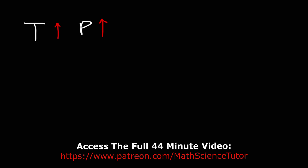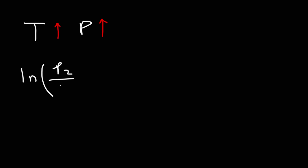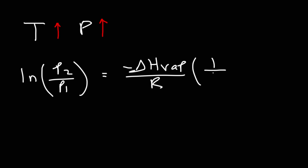There's a formula that relates vapor pressure and temperature known as the Clausius-Clapeyron equation: ln(P2/P1) = −(ΔH_vap / R) × (1/T2 − 1/T1). If you have a temperature and a pressure and want to find the new vapor pressure at a different temperature, you can use this formula. This formula will be covered in more detail in the full version of this video.